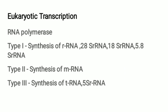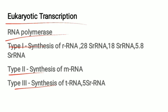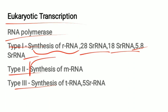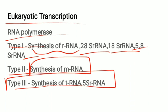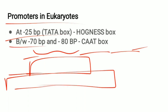Now let us see eukaryotic transcription. Eukaryotic DNA-dependent RNA polymerase consists of three types. Type 1 is involved in the synthesis of ribosomal RNA — 28S, 18S, and 5.8S rRNA. Type 2 is involved in the synthesis of mRNA, and type 3 is involved in the synthesis of tRNA and 5S rRNA.